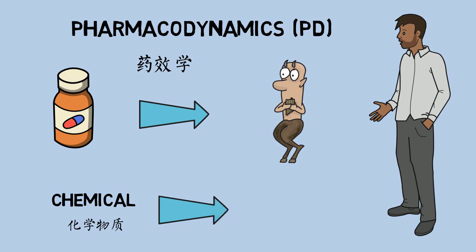In particular, pharmacodynamics is the study of how a drug affects an organism, whereas pharmacokinetics is the study of how the organism affects the drug.